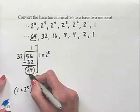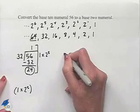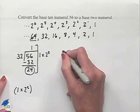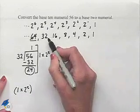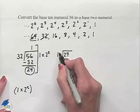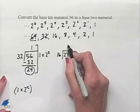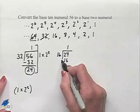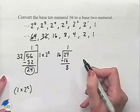Now we're going to take our remainder of 24 and work with it. 24, we're going to try to divide by the next greatest power of 2. That would be 24 divided by 16. 16 goes into 24 one time. We subtract and we get a remainder of 8.